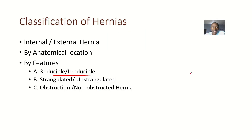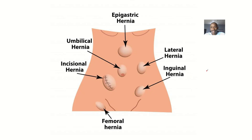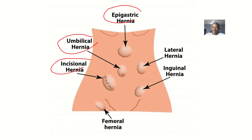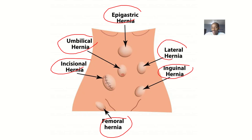Classification of hernia based on anatomical regions: you have hernia in the epigastric region — that's epigastric hernia. Hernia through the umbilical region — umbilical hernia. If you have hernia in the femoral triangle — that's femoral hernia. If you have hernia in the inguinal region — that's inguinal hernia. And if you have hernia further to the side, that's a lateral hernia. So that's classification based on location.